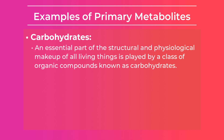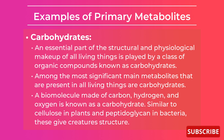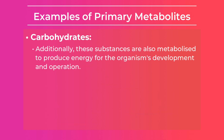Next is carbohydrates. An essential part of the structural and physiological makeup of all living things is played by a class of organic compounds known as carbohydrates. Among the most significant main metabolites present in all living things are carbohydrates — a biomolecule made up of carbon, hydrogen, and oxygen. Similar to cellulose in plants and peptidoglycan in bacteria, these give creatures structure and are also metabolized to produce energy for the organism's development and operation.